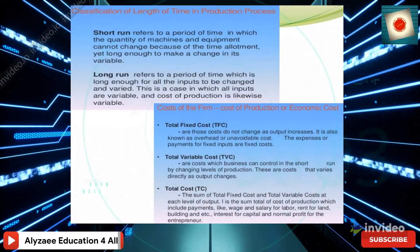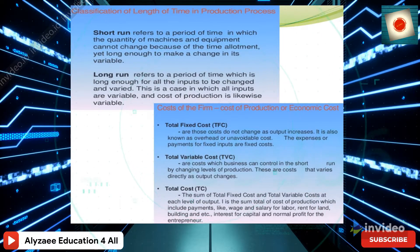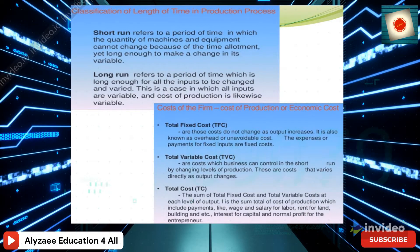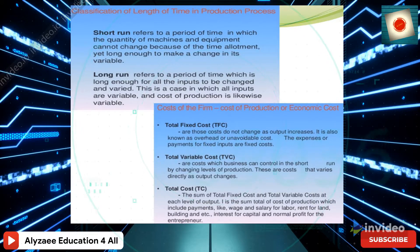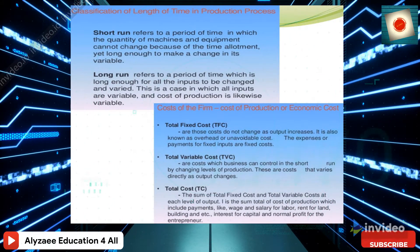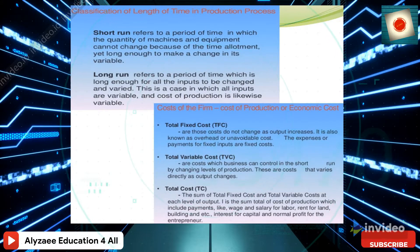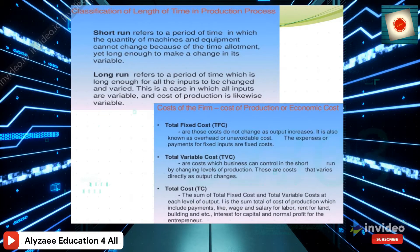In this slide we will be looking at the classification of length of time in the production process — short run and long run. Short run refers to a period of time in which the quantity of machines and equipment cannot change, yet long enough to make changes in variable inputs. Long run refers to a period of time which is long enough for all the inputs to be changed and varied, so all inputs are variable.